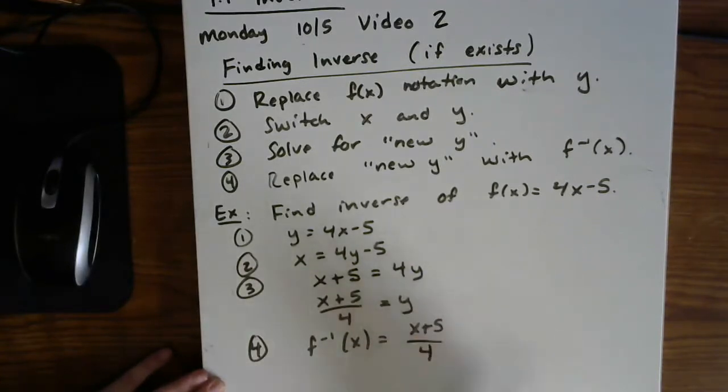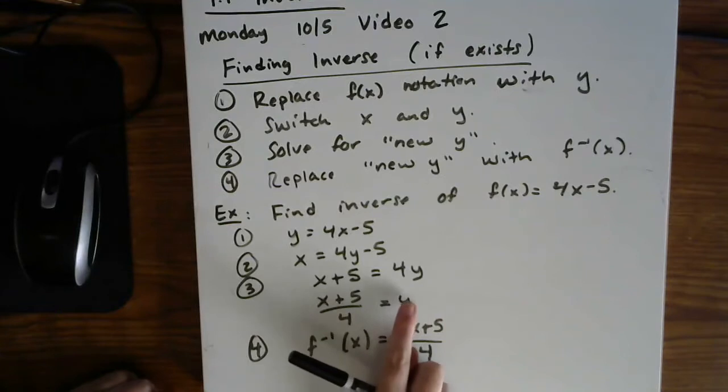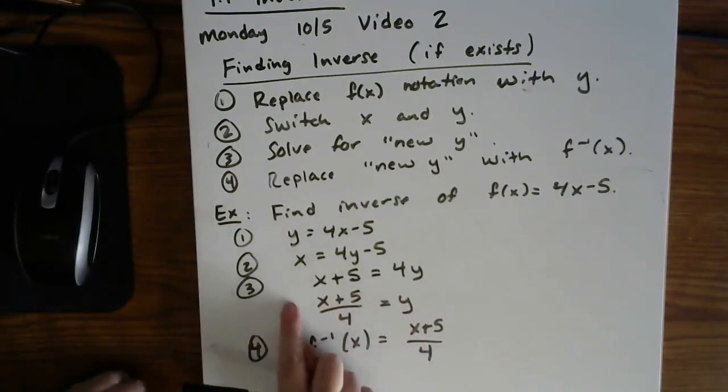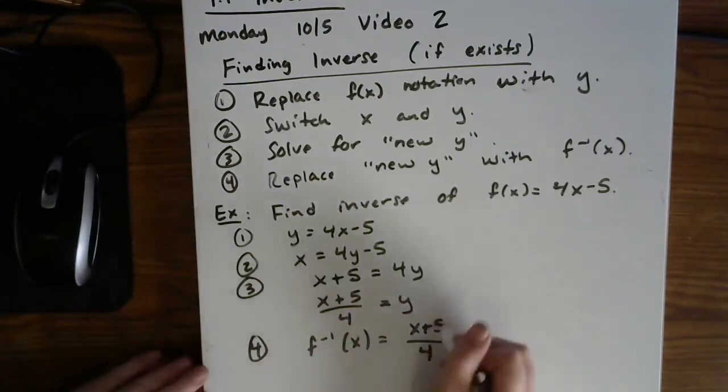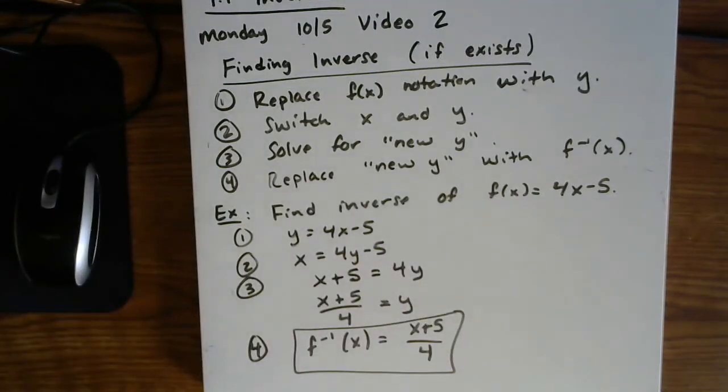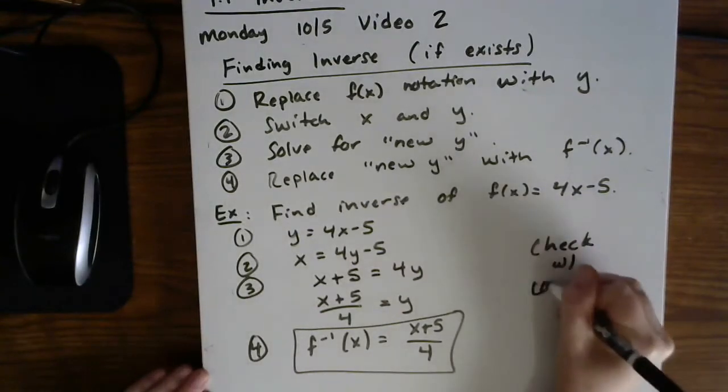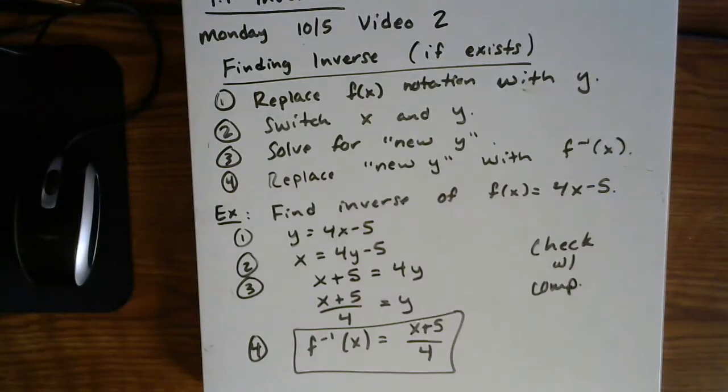Now, keep in mind, it doesn't matter that I switched these. Equalities have symmetry across the equal symbol. So I just moved the y to the other side and then wrote it in function notation. So there is our inverse. Now, of course, you can check this with the compositions, just like we did in the previous video.